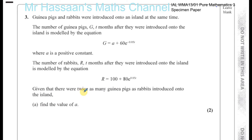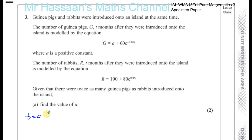First of all, when they were introduced onto the island, they were introduced at the same time. So we can say that's the time when t equals 0, because t is the number of months after they were introduced onto the island. So when t is 0, that's when they were first introduced onto the island.